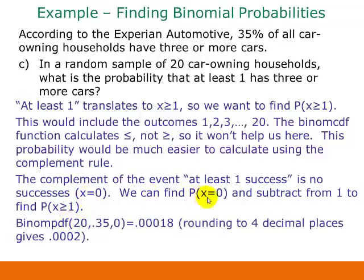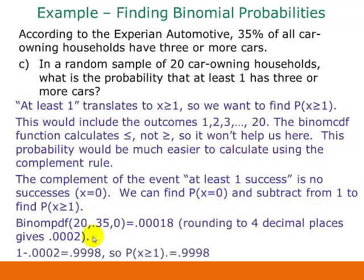Since we want the probability that X = 0, we use binomPDF with N = 20, P = 0.35, and X = 0. This gives 0.00018, or 0.0002 rounded to four decimal places. That's the probability of no successes. To find the probability of at least one success, we subtract from 1: 1 − 0.0002 = 0.9998. So the probability of at least one success is 0.9998.